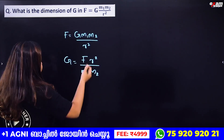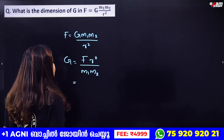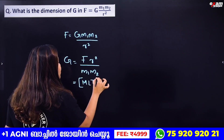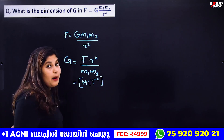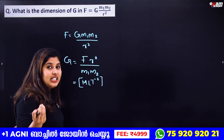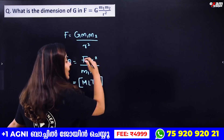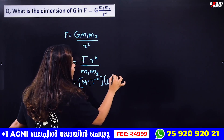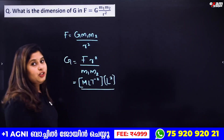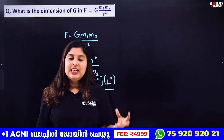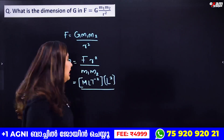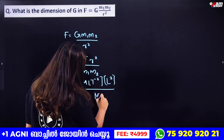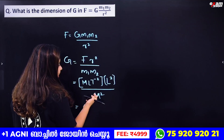What are the dimensions? Force F has dimension MLT⁻². The radius r has dimension L, so r² has dimension L². And m₁·m₂ has dimension M².